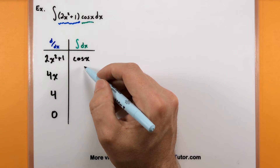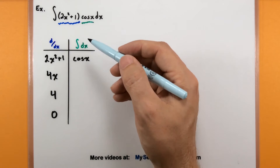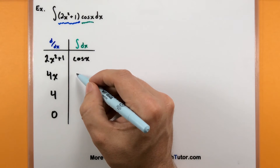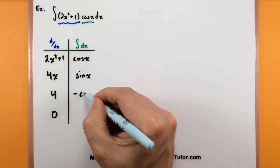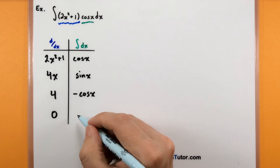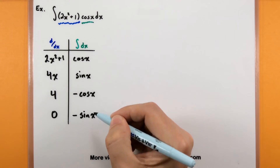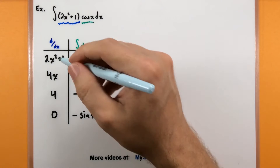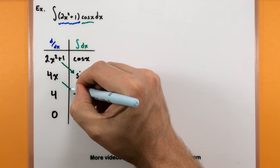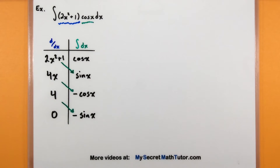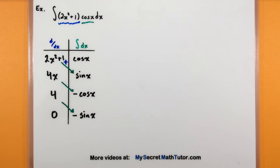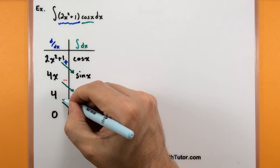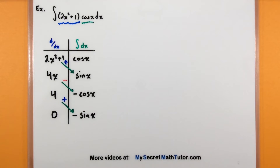On the right side, time to take anti-derivatives — we have to think carefully. The anti-derivative of cosine goes to sine, the anti-derivative of sine is negative cosine, and the anti-derivative of negative cosine is negative sine. Now that we have those, we connect them along the diagonal. These start with plus and then alternate: plus, minus, plus, all the way down until you've run out of stuff.